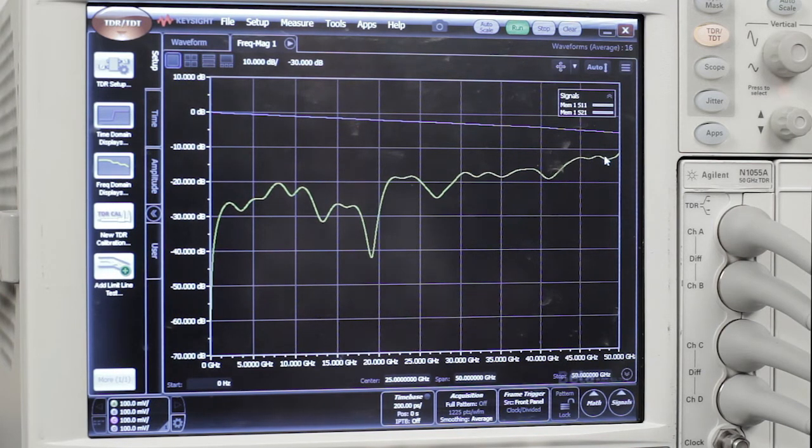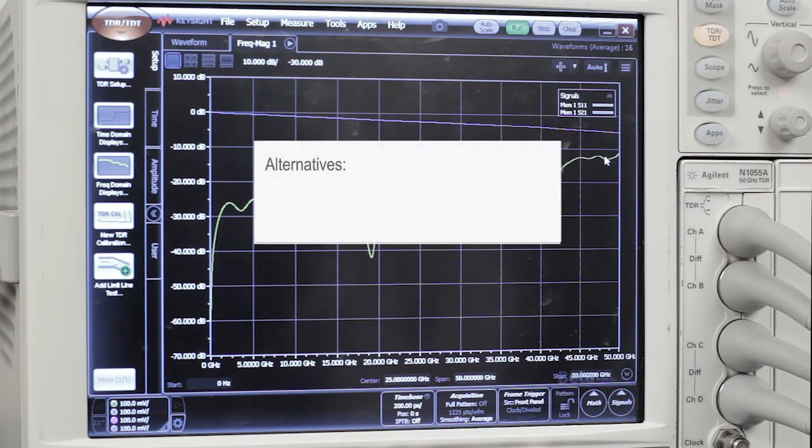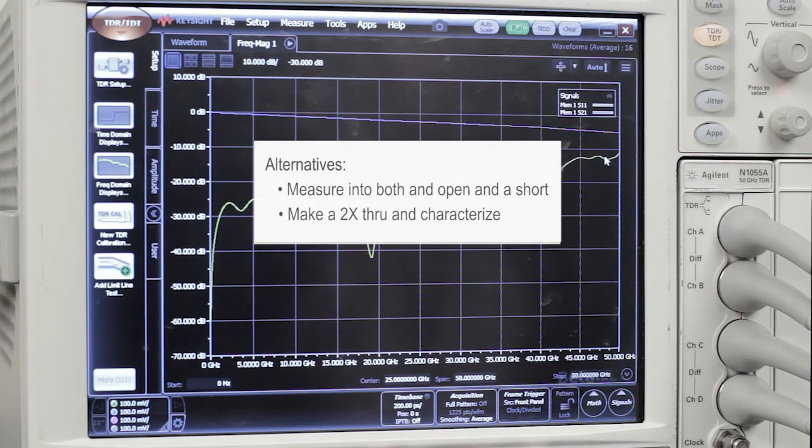If you're performing this, and you run into a problem where your insertion loss and return loss graphs cross each other at a low frequency, there's a couple of alternatives you can do. Instead of just measuring into an open, you can measure into both an open and a short, and you may get a better model. And if that doesn't work for you, the best thing to do is to not use one port AFR, but to make a two times through and characterize that.